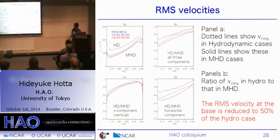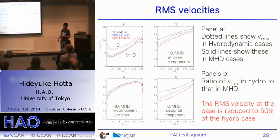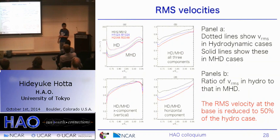This shows the RMS velocity. The dashed line is the hydrodynamic case for three component RMS velocity and the solid line is the MHD case. The RMS velocity is suppressed. The ratio between hydrodynamic and MHD case shows that in the highest resolution case the RMS velocity is suppressed to 50% at the base of the convection zone. Interestingly, the suppression almost converges in the vertical x direction, but in the horizontal direction it does not converge, and in the higher resolution case the horizontal RMS velocity is more suppressed. This is important for energy transport.